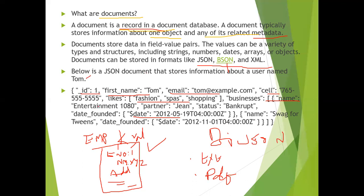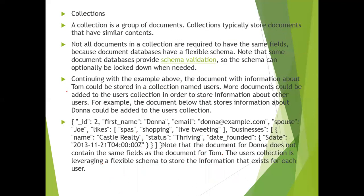Here is an example JSON document that stores all the information about a user named Tom — Tom's details are written completely in a single document. This entire thing is called one document. A group of documents is called a collection.